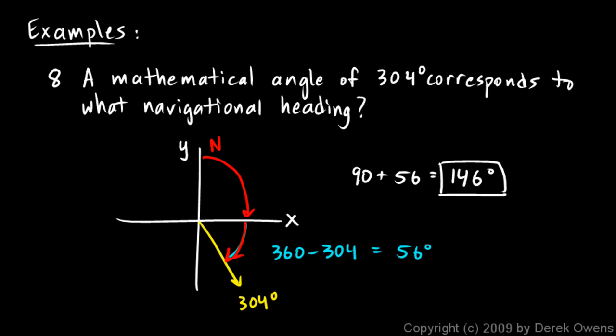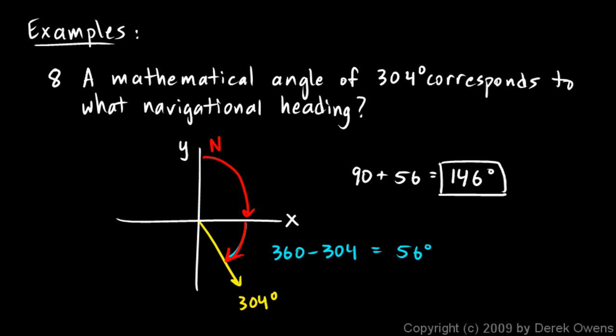A mathematical angle of 304 corresponds to a navigational heading of 146 degrees.